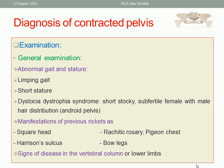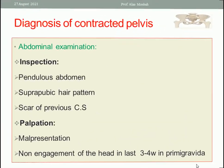On general examination, observe the patient's gait — ask her to walk in front of you to detect any abnormal gait like a limping gait. Short stature may be associated with contracted pelvis. Some syndromes, like the dystrophy dystocia syndrome, present with a short, stocky, subfertile woman with male hair distribution and android pelvis. There may be manifestations of previous rickets such as square head, Harrison's sulcus, rickety rosary, pigeon chest, or bow legs. Signs of disease in the vertebral column or lower limbs may also be detected.